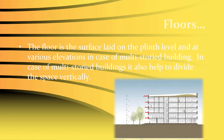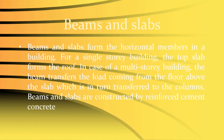Beams and slabs form horizontal members in a building. For a single-story building, the top slab forms the roof. In a multi-story building, beams transfer the load from the slab above to the columns. Beams and slabs are typically constructed in reinforced cement concrete, though in steel structures beams may be steel members and slabs can be of various materials.